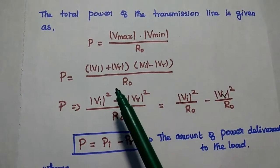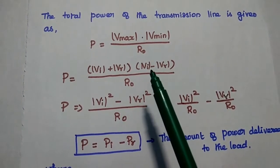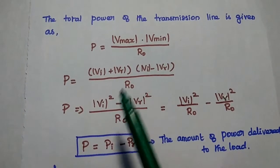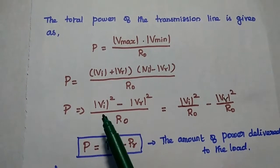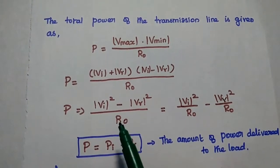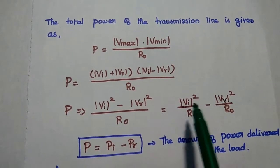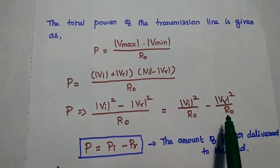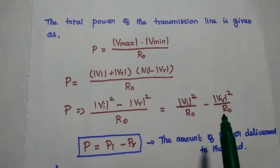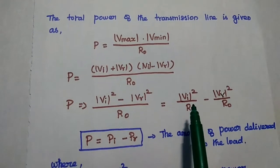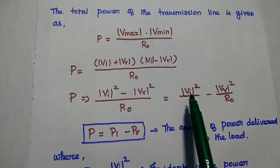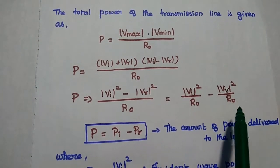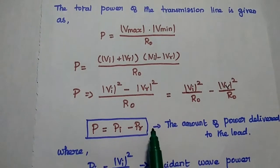The Vmin value is Vi minus Vr. We can use the identity (A + B)(A − B) = A² − B², giving us Vi² minus Vr² divided by R0. Therefore, P is equal to Vi² divided by R0 minus Vr² divided by R0, where R0 is the characteristic impedance for the zero dissipation line. Here, Vi² divided by R0 represents the incident power, and Vr² divided by R0 represents the reflected power.